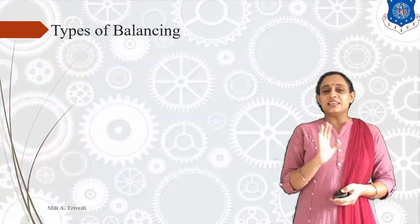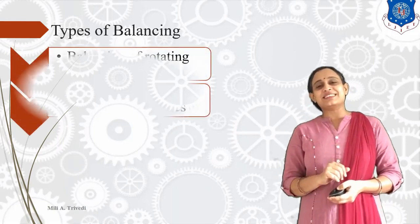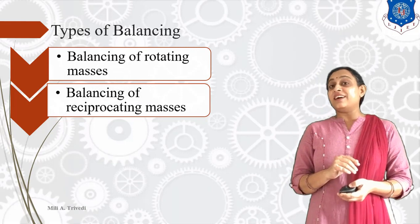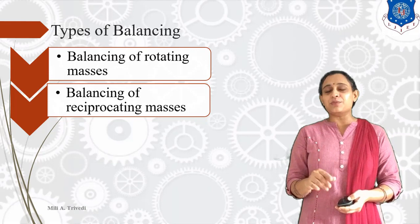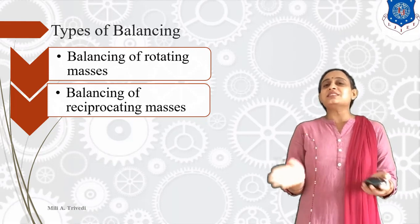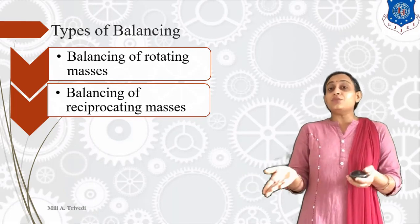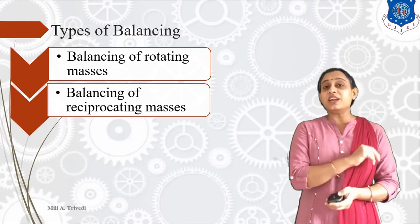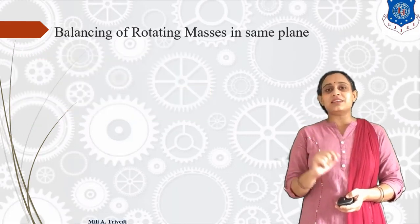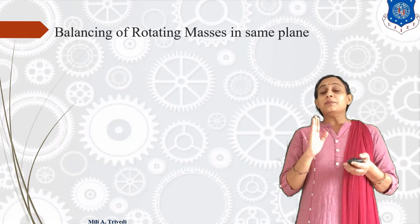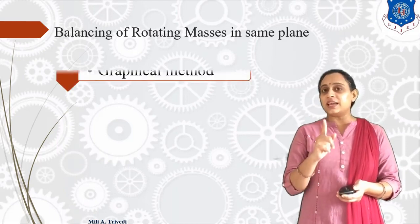This is the introduction of static and dynamic balancing. Now let us look at the types of balancing. We have two types: one is the rotating mass system and the second is the reciprocating mass system — balancing of rotating masses and balancing of reciprocating masses. Here in our case, let us study about balancing of rotating masses.